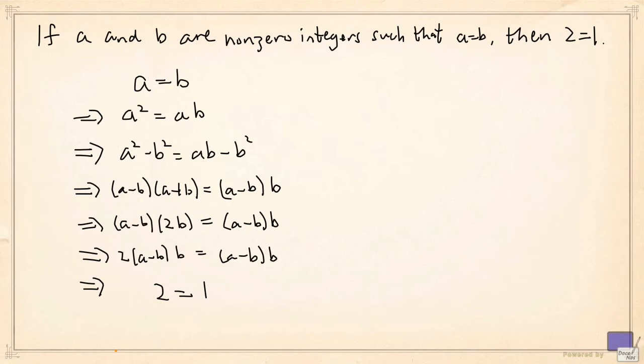This statement clearly is false because 2 is not equal to 1. And so this proof cannot be a valid proof. So what's wrong here?